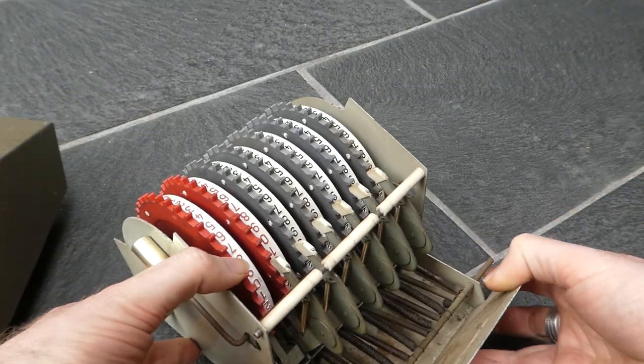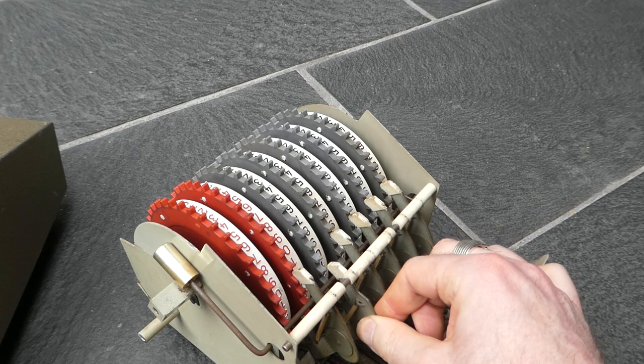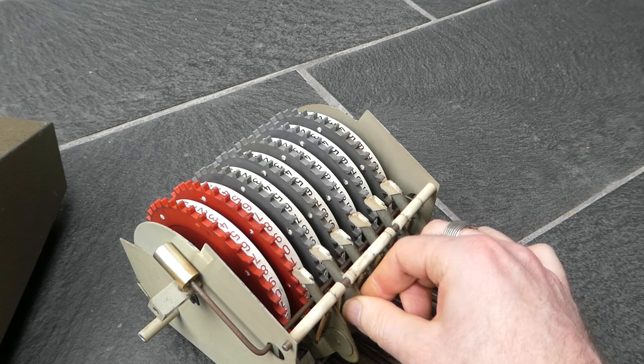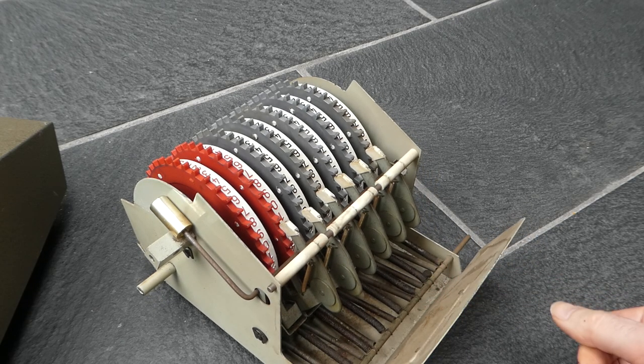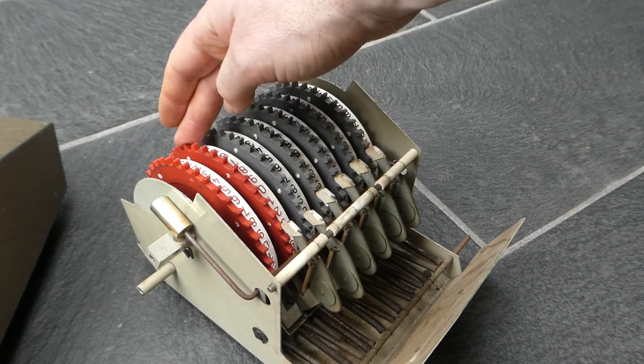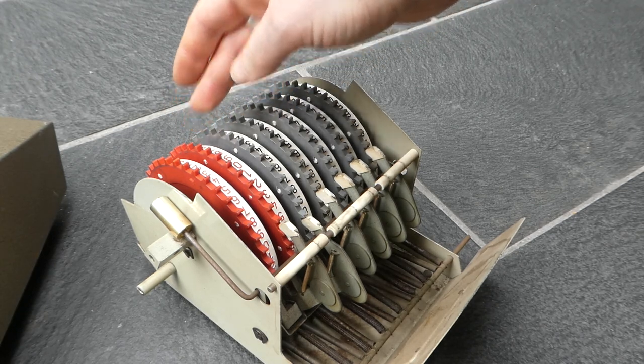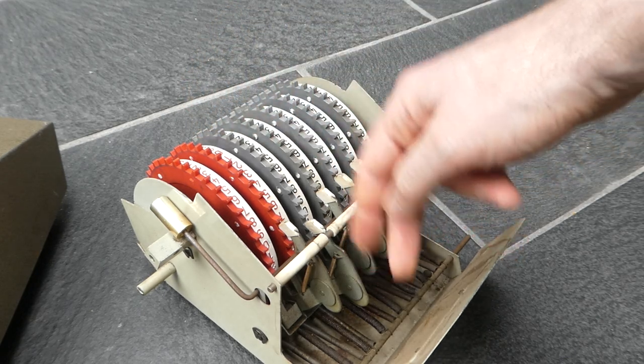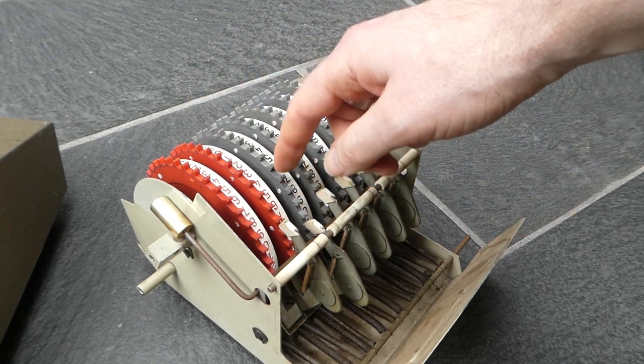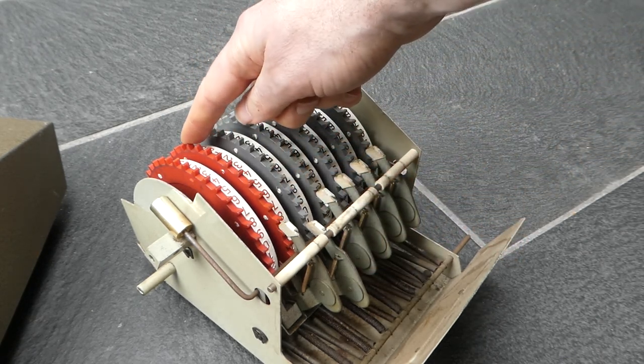As you can see, it has these arms here on springs, and those are the carry mechanism. When a wheel gets moved, this arm moves back, and when it passes zero the arm gets released and pushes the next wheel one step forward.